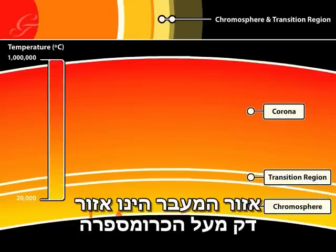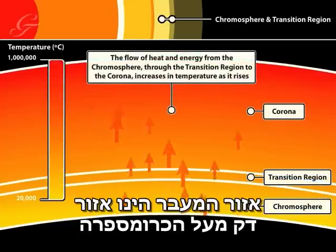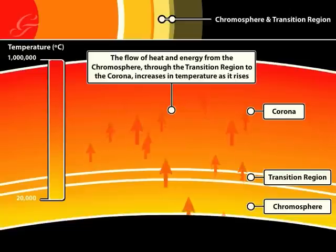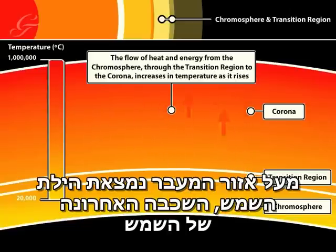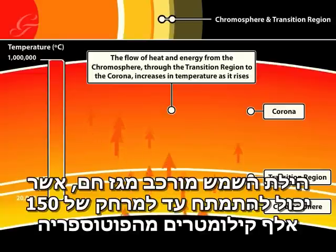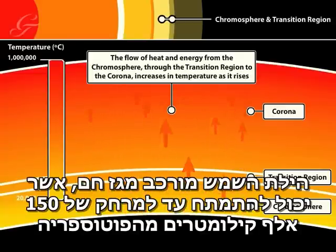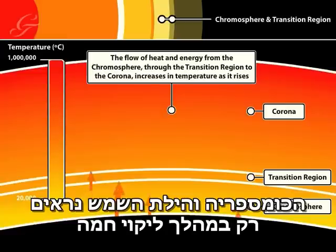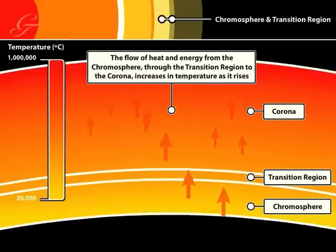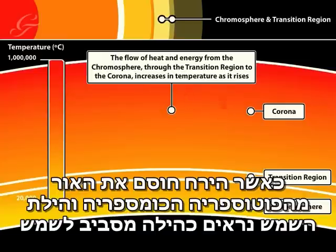The transition region is a relatively thin layer above the chromosphere. Above the transition region is the corona, the last layer of the Sun, which is made up of hot, diffused gas that can stretch up to 150,000 km from the photosphere. You can only see the chromosphere and the corona during a solar eclipse, when the Moon blocks out the light from the photosphere, leaving the chromosphere and corona visible as a halo around the Sun.